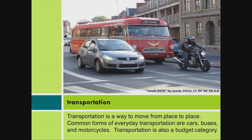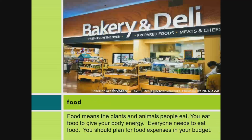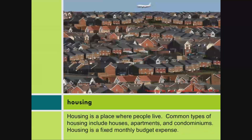Common forms of everyday transportation are cars, buses, and motorcycles. Transportation is also a budget category. Food means the plants and animals people eat. You eat food to give your body energy. Everyone needs to eat food, so you should plan for food expenses in your budget.